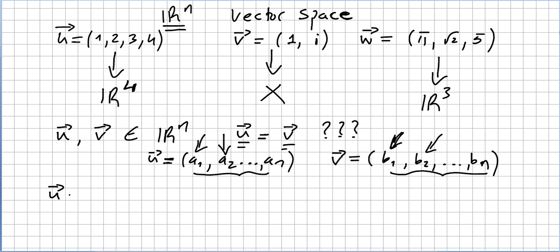So u and v are equal if and only if a_1 equals b_1, a_2 equals b_2, and so on. So each component is equal to the corresponding one.